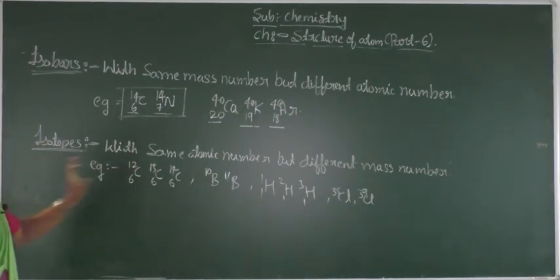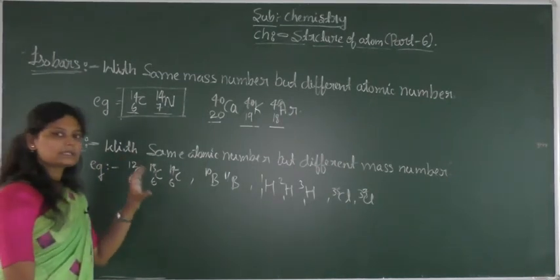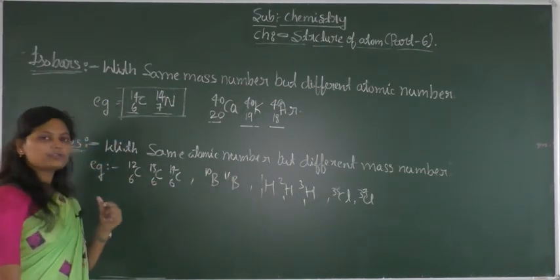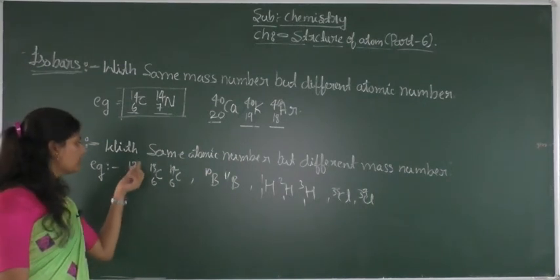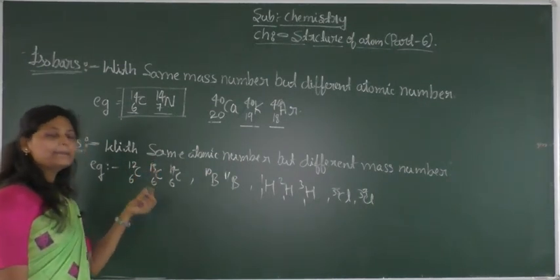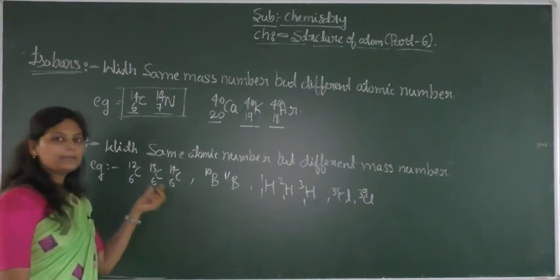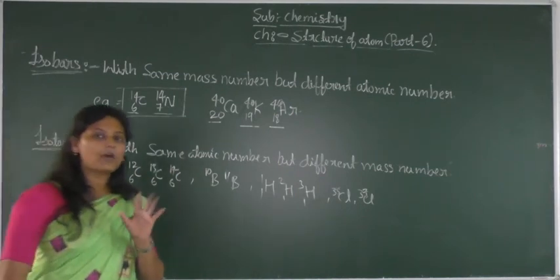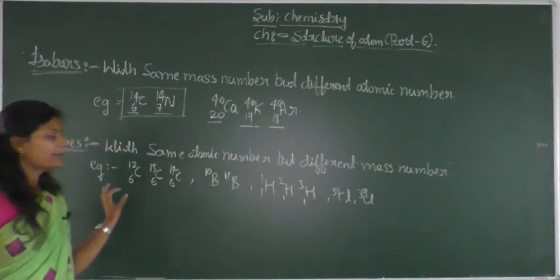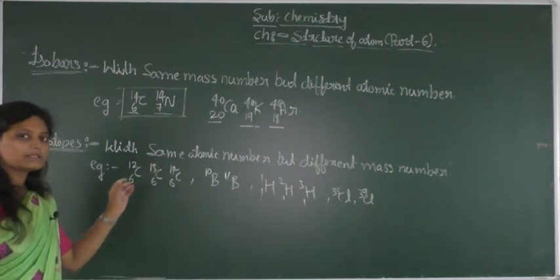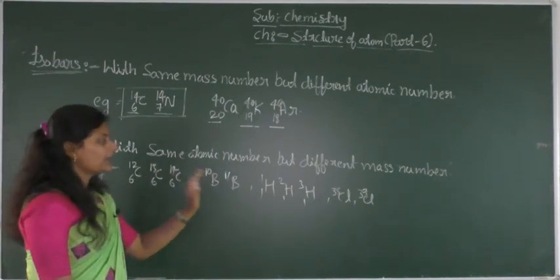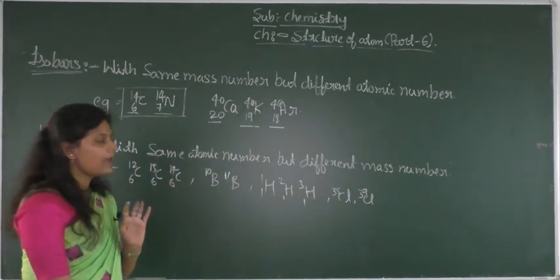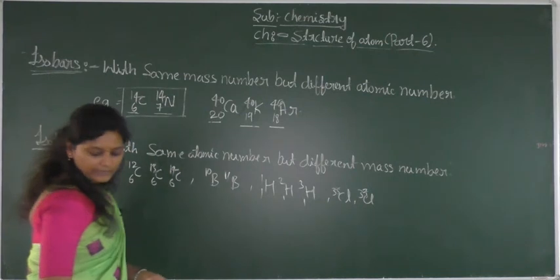When we consider isotopes, they have the same chemical properties. Isotopes differ only in the number of neutrons. The number of neutrons is different among isotopes, but their chemical properties remain the same.